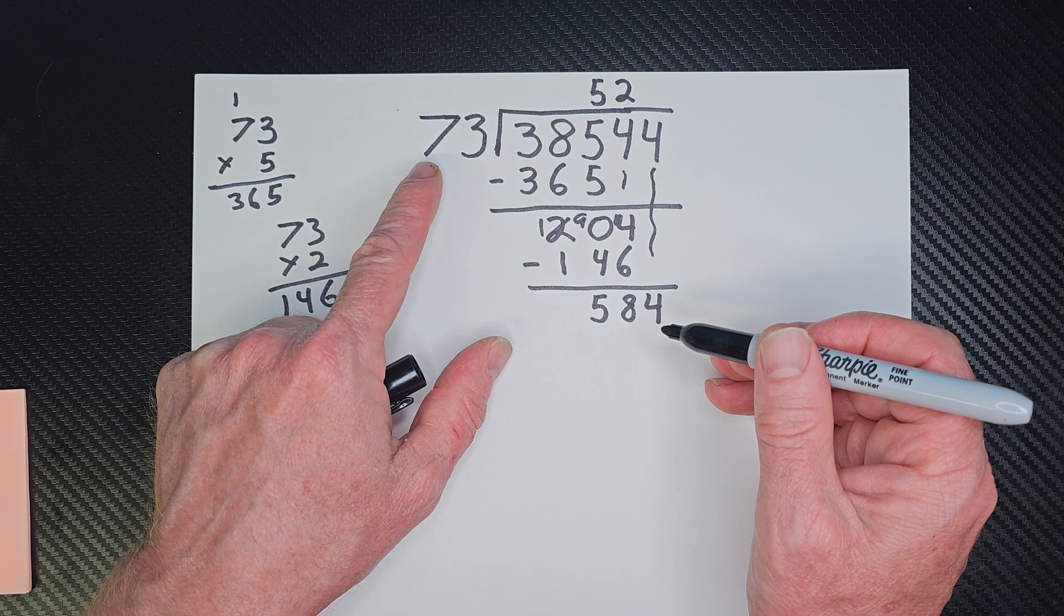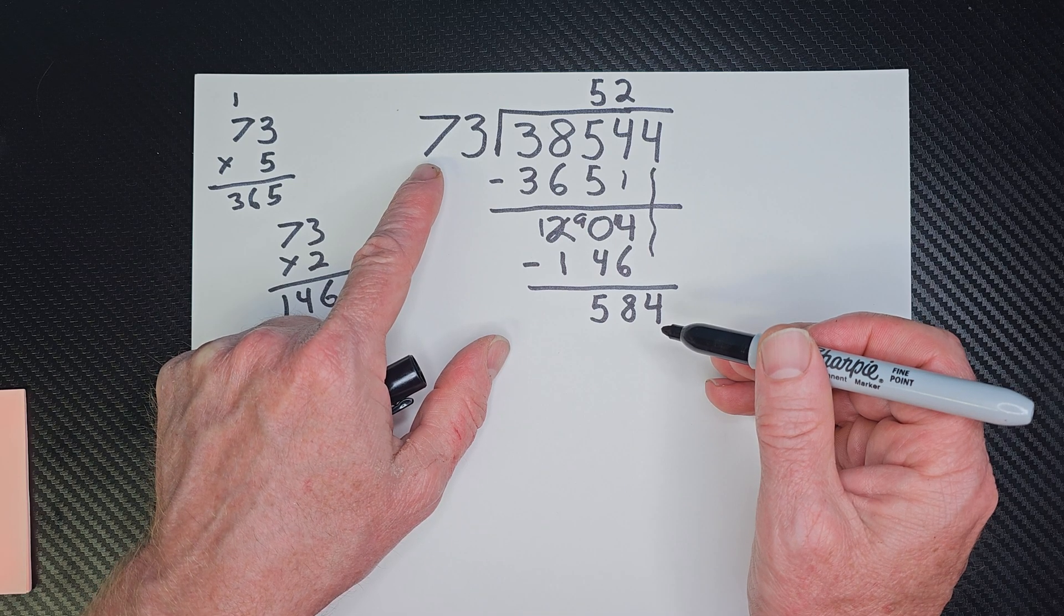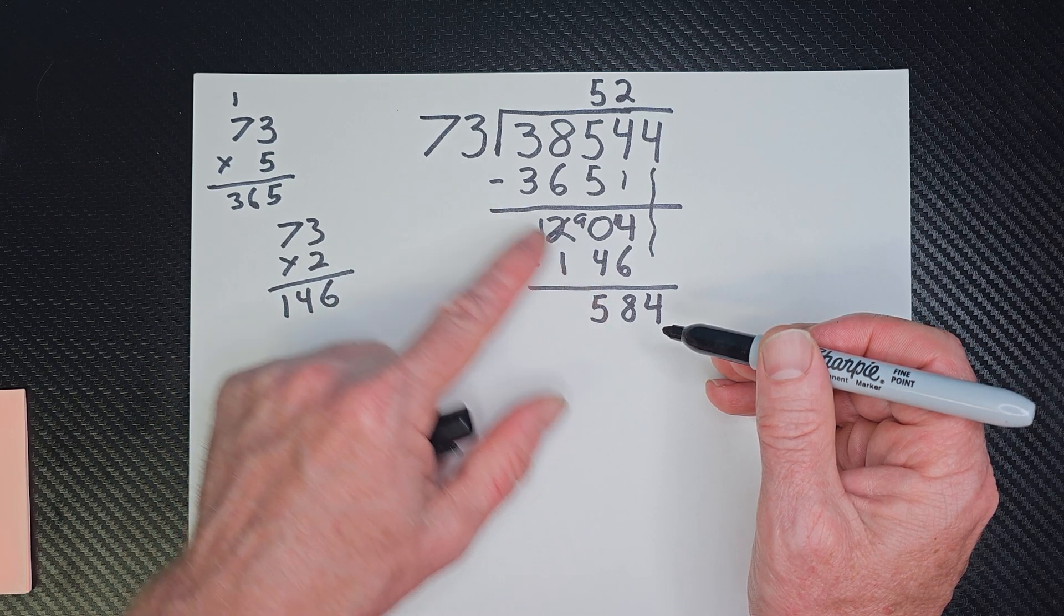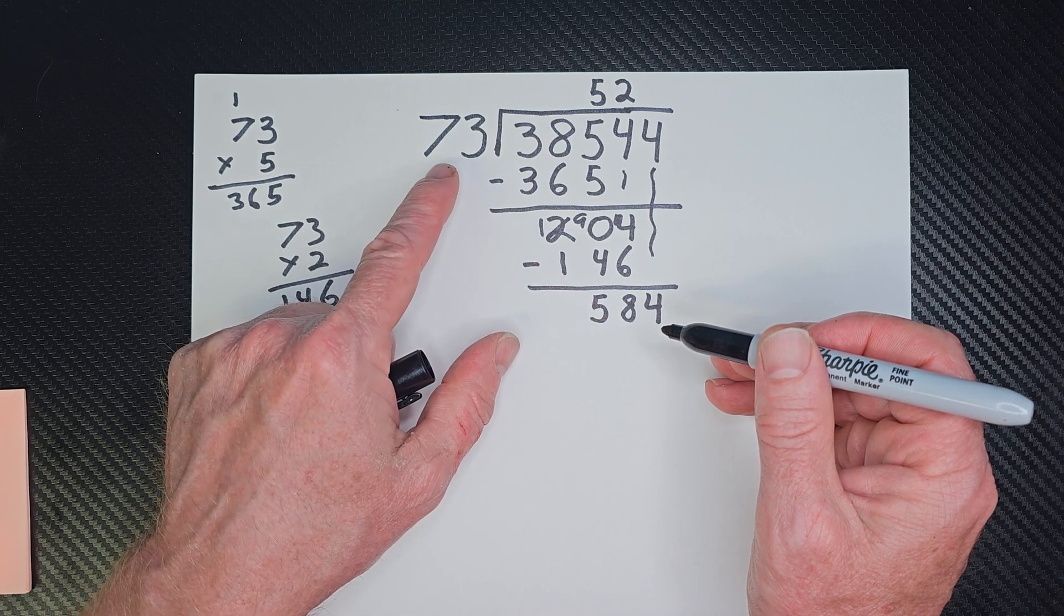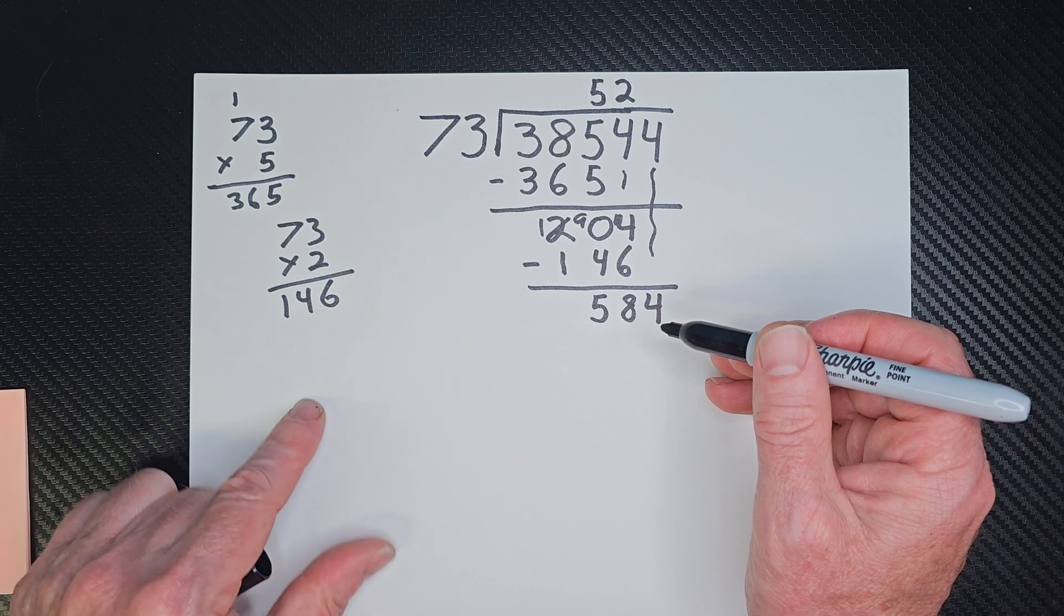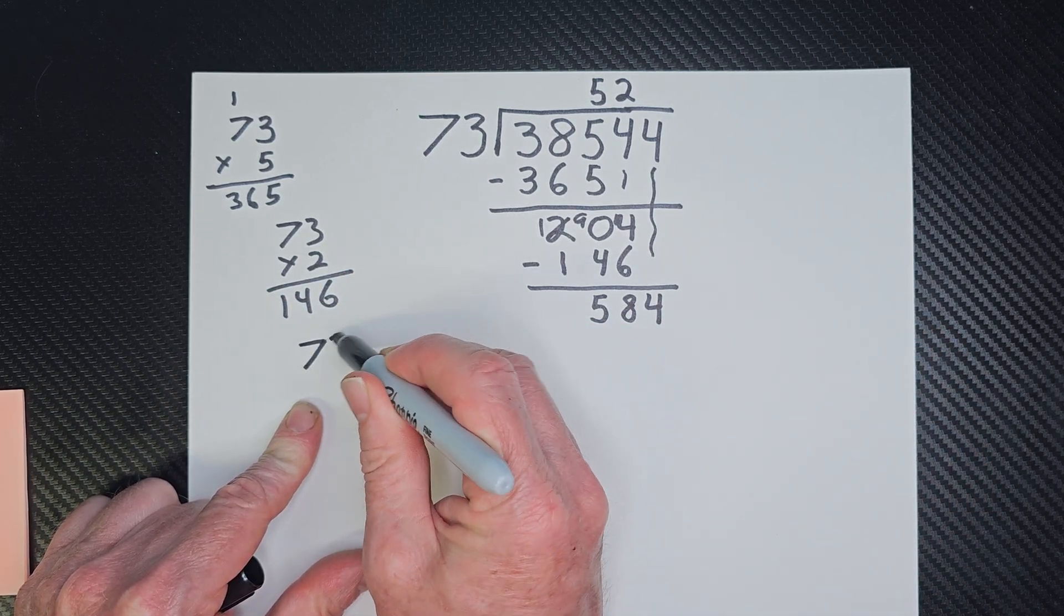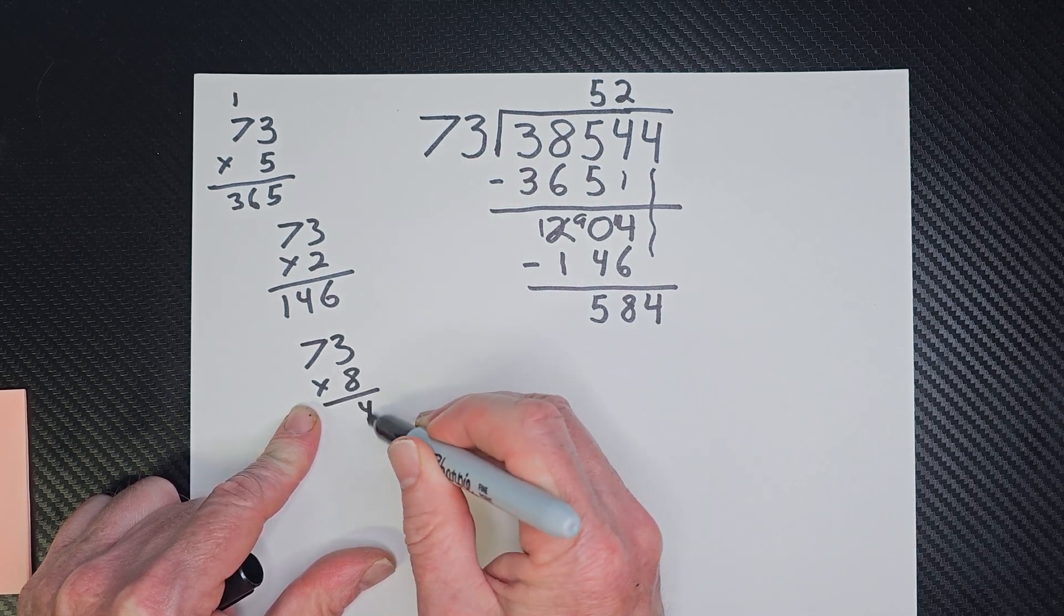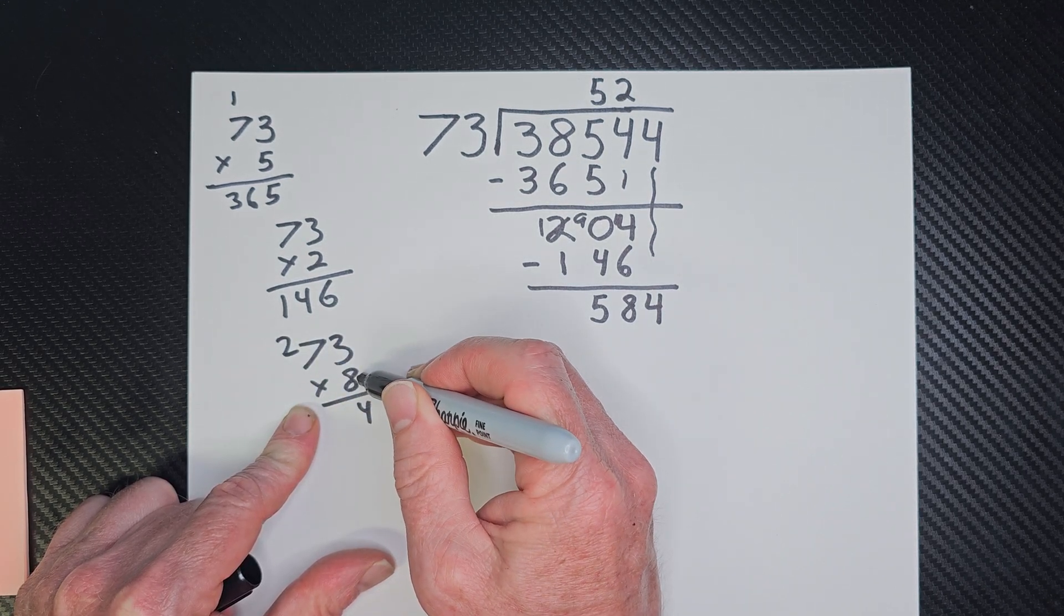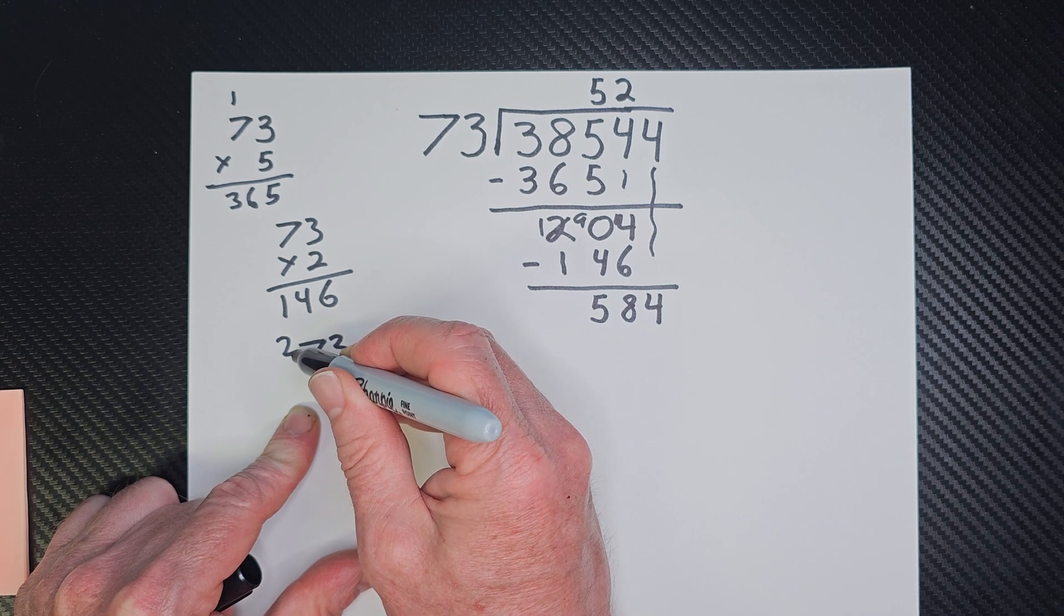7 times 8. 70 times 8 would be 560. 70 times 9 would be 630. So we're going to do 73 times 8. So let's see what that looks like. 73 times 8. 8 times 3 is 24. 7 times 8 is 56. 57, 58.